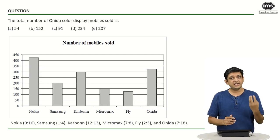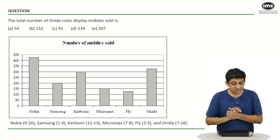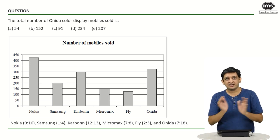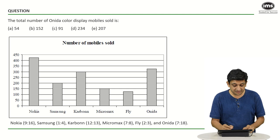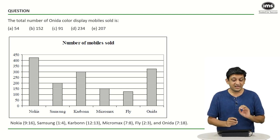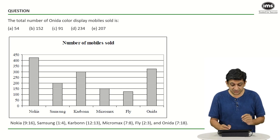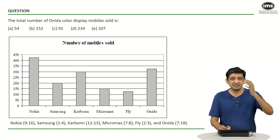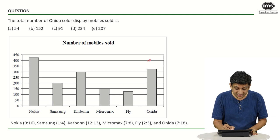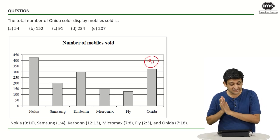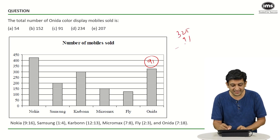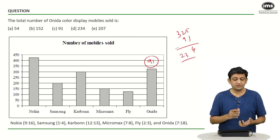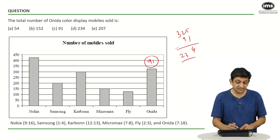For the second question, we can use the information from the previous question. For Onida, we already found that 91 mobiles had black and white displays. So the number of mobiles with colored displays would be 325 minus 91, which gives 234. The correct answer is option D, 234.